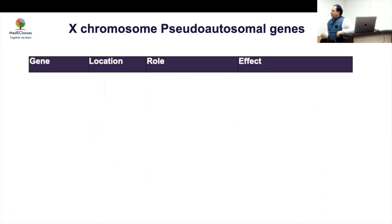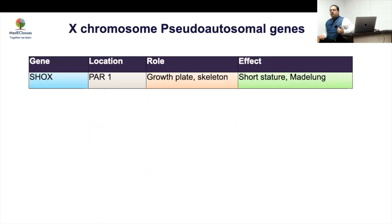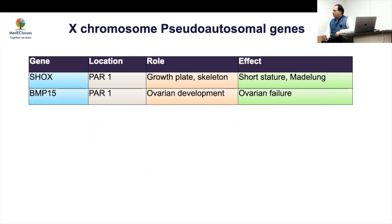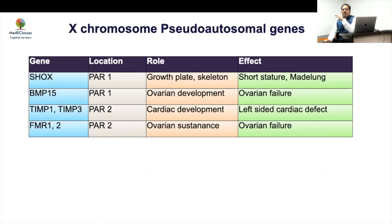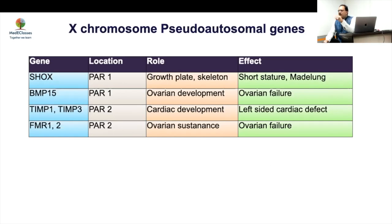Different chromosomal regions are responsible for different manifestations. The SHOX gene, the major regulator of growth, causes short stature and Madelung deformity when abnormal. BMP15 is more of an ovarian gene. TMP region is important for cardiac development. FMR1 affects ovarian function — deficiency there causes only ovarian failure with no other abnormality. And then there is the lymphedema region.